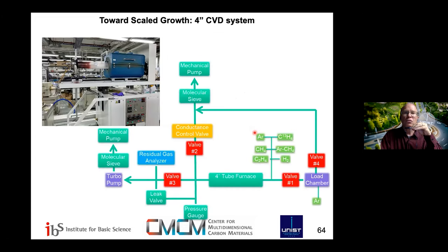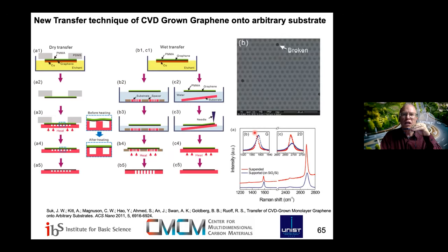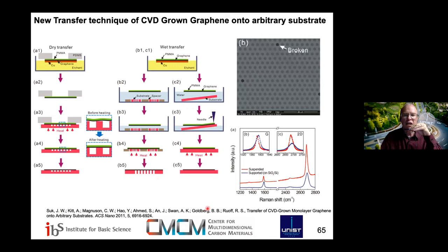We then scaled up — though people around the world and particularly companies have scaled up significantly further. We worked on transfer as well, an ongoing effort for many groups. This was Jiwon Sook, a student in my group, working with some of our team members, and Bennett Goldberg and Anna Swan from Boston University joined in on interrogating the quality of the graphene through Raman and other methods.